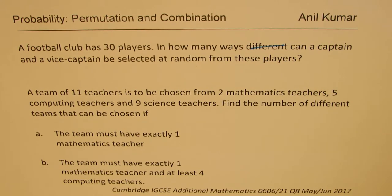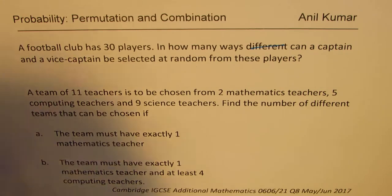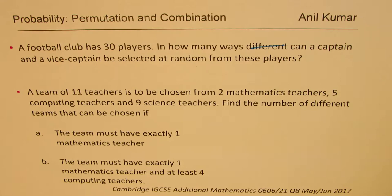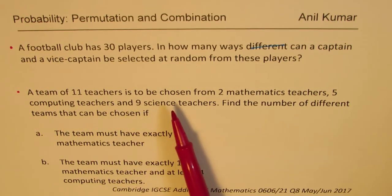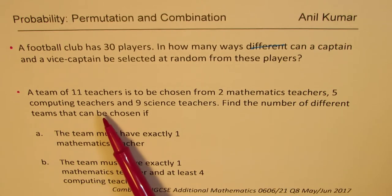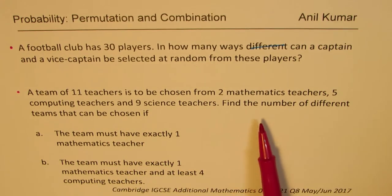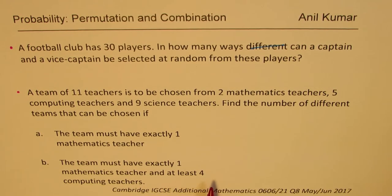The question here is a football club has 30 players, in how many ways can a captain and a vice-captain be selected at random from these players? That is one part of the question. The second question on probability is a team of 11 teachers is to be chosen from two mathematics teachers, five computing teachers and nine science teachers. Find the number of different teams that can be chosen if the team must have exactly one mathematics teacher, and B, the team must have exactly one mathematics teacher and at least four computing teachers. So it's an excellent question based on permutation and combination. Let us see how to answer.